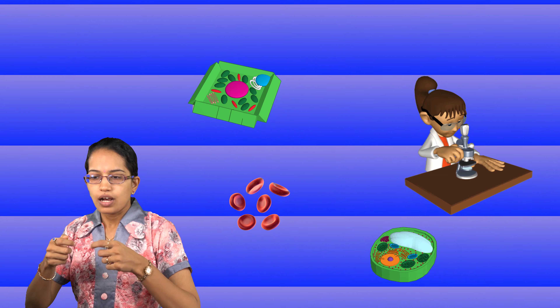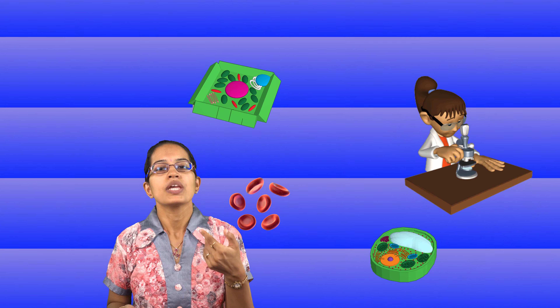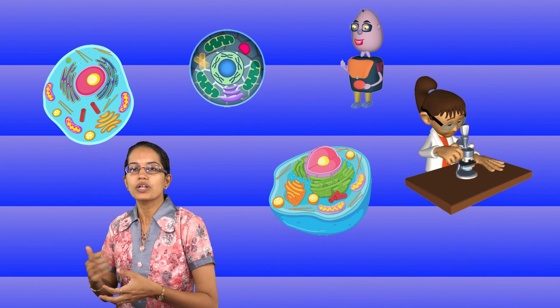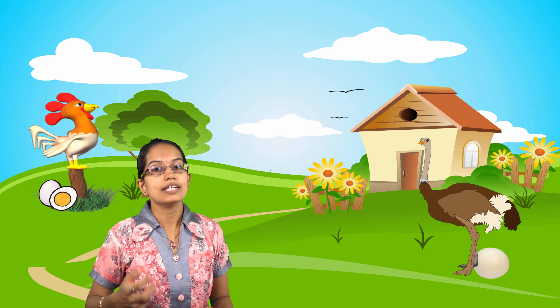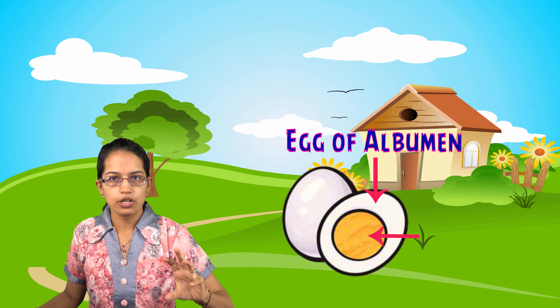Those cells are not directly visible, so we need to put some dye or stain. When we put some stain or dye, you can see the color of the cells, and those cells become very obvious under a microscope. On the other hand, there are cells which can be seen by the naked eye without any microscope. For example, the egg of an ostrich or a hen — that is again a cell. An egg has a shell, the white part known as albumin, and the center yellow part known as egg yolk, and that whole structure is considered as a single cell.